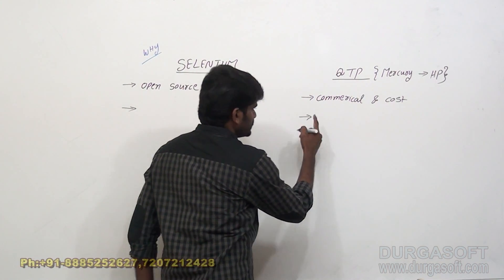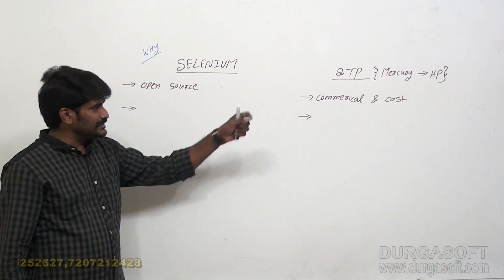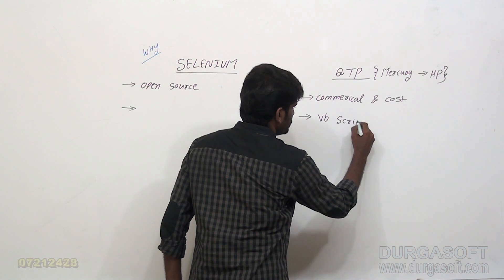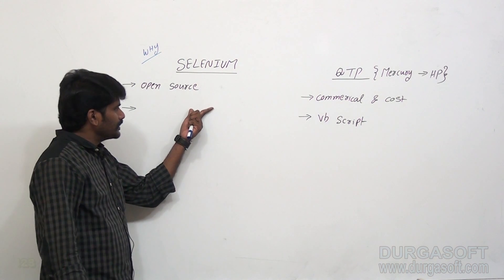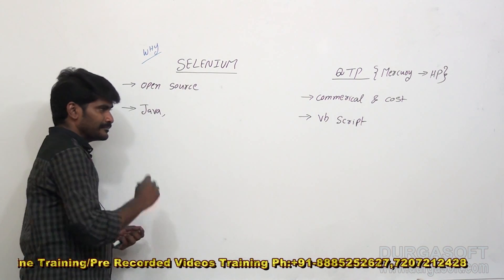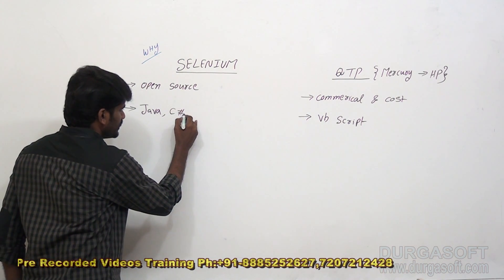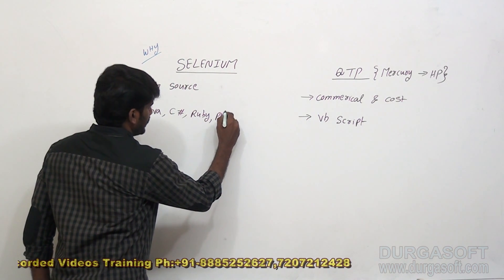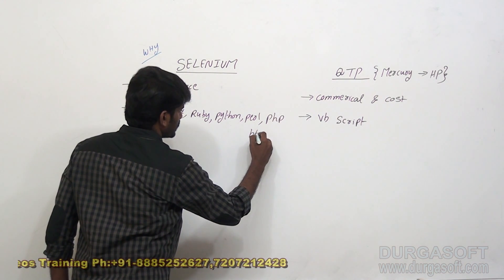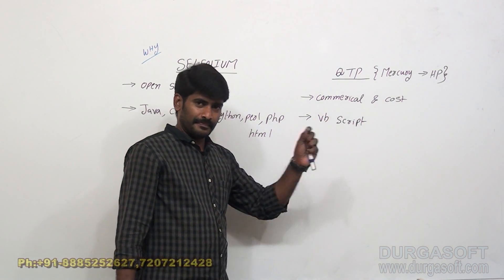Second difference: when converting test cases into test scripts we have to write programs using a scripting language. In QTP, programs are written using VBScript. What about Selenium? Selenium supports multiple languages: Java, C#, Ruby, Python, Perl, PHP, and HTML. QTP supports only VBScript.